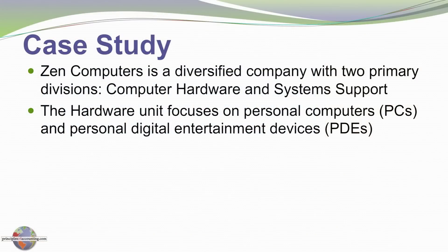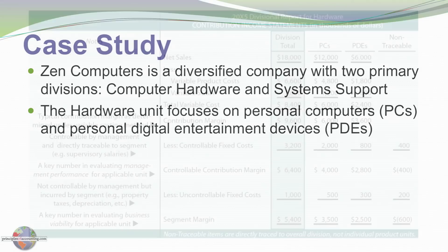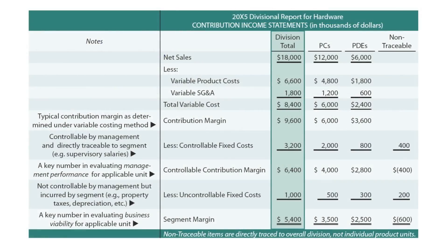Zen Computers is a diversified company with two divisions: computer hardware and system support. The hardware unit focuses on personal computers, that is PCs, and personal digital entertainment devices, or PDEs. Here's their report, and we can see the contribution margin for each product, the division, and the aggregate.